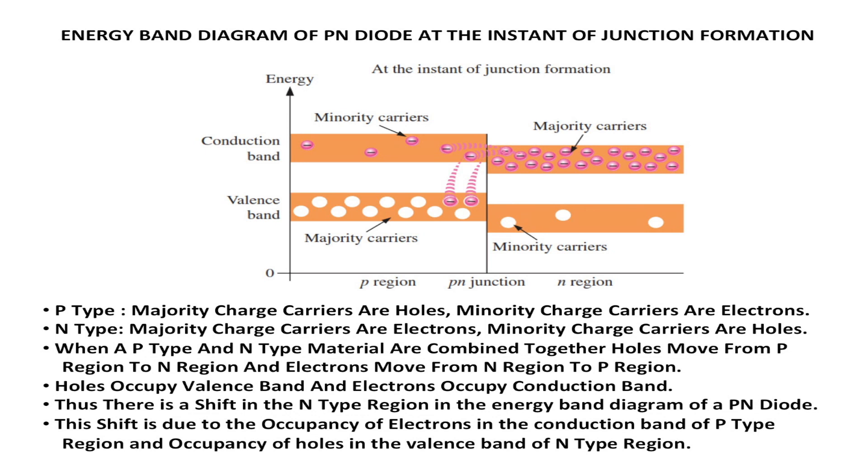When a P material and N type material is combined together, a depletion region is formed near the junction of the PN diode. Next we will see about the equilibrium condition of this PN diode under stable thermal condition. When the P type and N type material are joined together, the electrons from N type material move towards the P type material and occupy the conduction band. Similarly, the holes from P type material move from the P region to N region and occupy the valence band in the N type material.